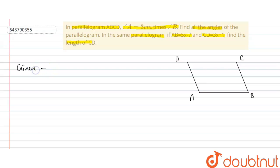So what is given? The given things are: angle A is equal to three times angle B, and we also know that AB is equal to CD. And we know that angle A is equal to angle C, and angle B is equal to angle D.